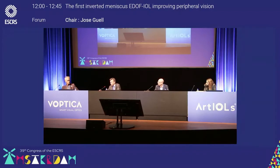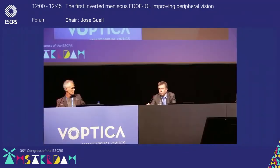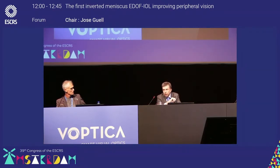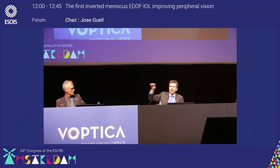Thank you very much, Jorge, for the question. You are right, and this is something we have in mind. Your calculation and the idea that the safe factor for the meniscus was better for myopic eyes was based at the time only on on-axis calculations. Our main issue here is that we have been trying to optimize, and we forget about on-axis.